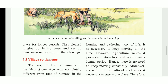Agriculture — meaning farming — made it possible to store food and use it over a longer period. Hence, there was no need to keep moving constantly. The nature of agricultural work made it necessary to stay in one place, and therefore people established permanent village settlements. Because of agriculture, people established permanent village settlements and lived in them generation after generation. This is how village settlements emerged in the new stone age.